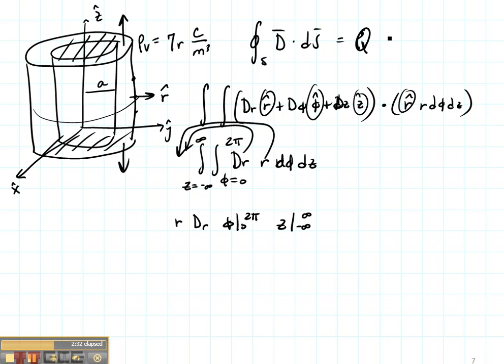Now let's see what this is equal to. Because I have a volume charge distribution this is going to be the integral, the volume integral of that charge distribution. So let's write that. This is going to be a triple integral of my volume distribution which is 7_R coulombs per meter cubed. And the D_R term from table 3.1 is R D_R D_phi D_Z.